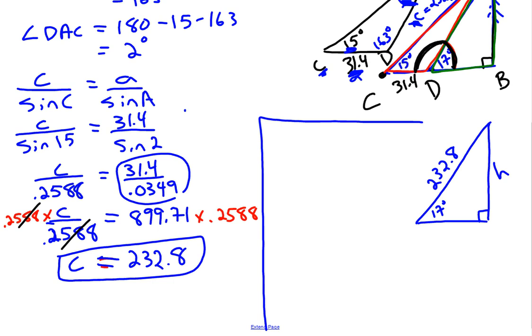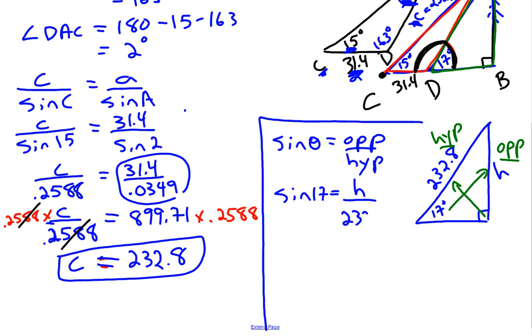So we can now use a primary trig ratio. It's a right angle triangle. The hypotenuse is opposite the 90 degree angle. The opposite side is opposite this 17 degree angle that we have. This is a question that involves the opposite and the hypotenuse which means we're going to use sine. Just a reminder that the sine of an angle is equal to the opposite over the hypotenuse. Plug in the values that we have. The angle is 17 degrees. The opposite side we don't know. We'll call it H. And the hypotenuse is 232.8.